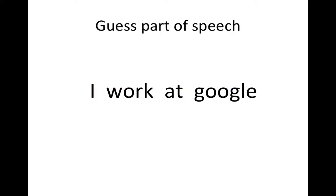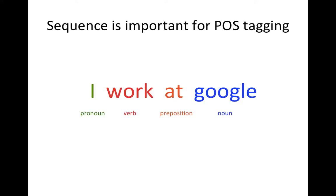How about this sentence? In this sentence, 'work' is now a verb and 'Google' is a noun. How does your brain classify these words differently in different sentences? Perhaps you thought 'work' as a verb because you saw 'I', which is a pronoun, just before 'work.' And you thought 'Google' as a noun because you saw the combination of pronoun, verb, and preposition before the word.